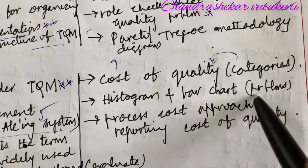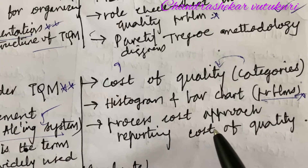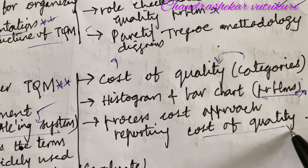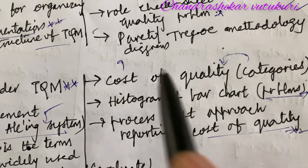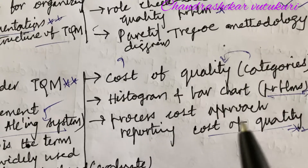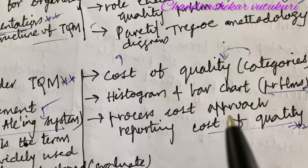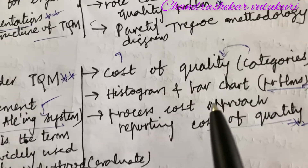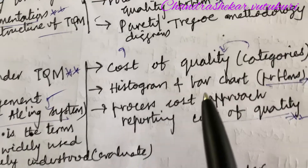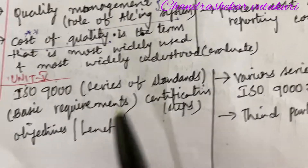Cost of quality and categories about the cost of quality, and histogram and bar chart problems — sometimes these are asked. The process cost approach and reporting the cost of quality — explain this term — that may be 9A or 9B. I'm not going to highlight any short questions in a few topics; you are supposed to be thorough with all the long questions so that you can work out both short and long.